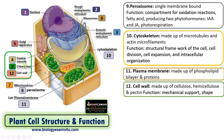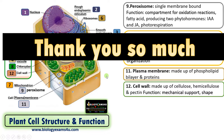Three structures — the central vacuole, chloroplast, and cell wall — are absent in animal cells. In animal cells, if vacuoles are present, they are very small. And that covers plant cell structure and function. If you find this video useful, please consider subscribing to this channel. Thank you so much for your support. You are with biologyexams4u.com.